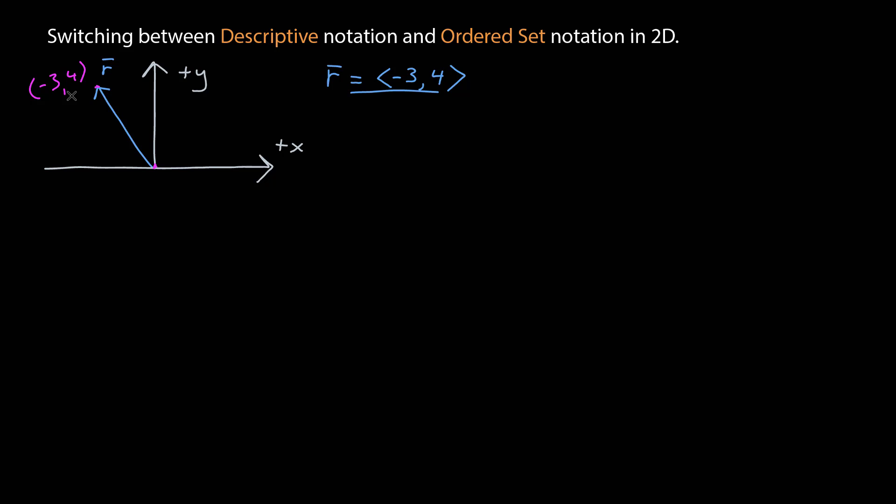I want to put this into descriptive notation where it has some magnitude and then I need to describe the direction the vector is pointing. Finding the magnitude is easy enough. It is the square root of the sum of the squares of the individual numbers.